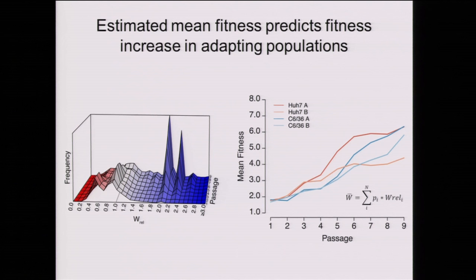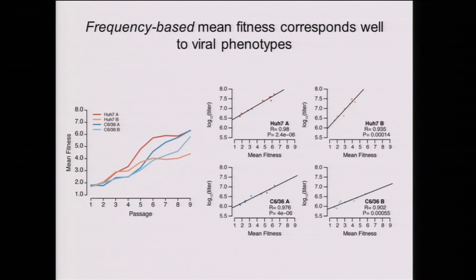Looking at these populations over time—fitness distribution on the X-axis, passage number on the Y going backwards, and frequency of alleles at a given fitness—we start with a population containing many deleterious and neutral mutations, and over time high-fitness mutations accumulate and drive out deleterious and neutral alleles. This produces an increase in mean fitness over the course of the experiment, and this mean fitness estimate from frequency data agrees very well with the biological titers I showed earlier, in all populations.